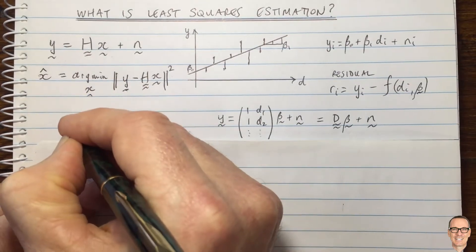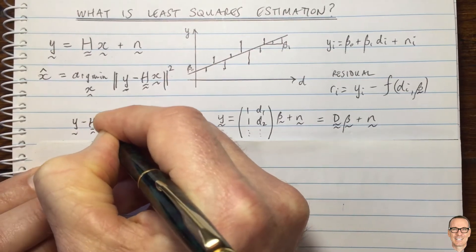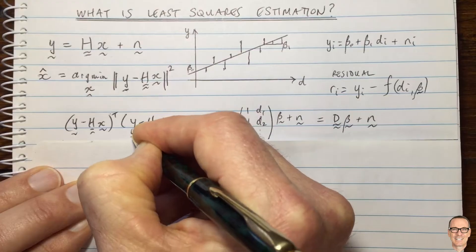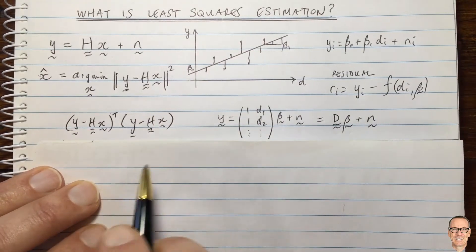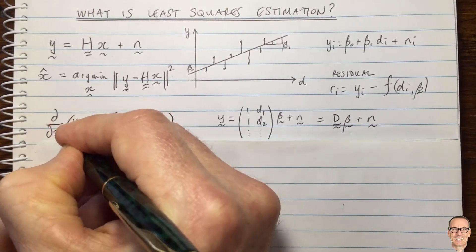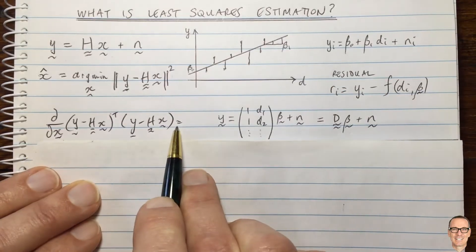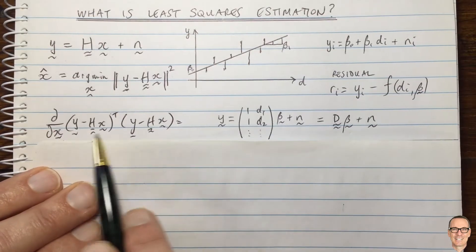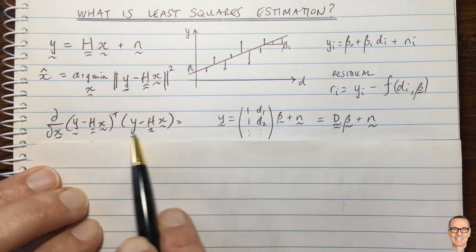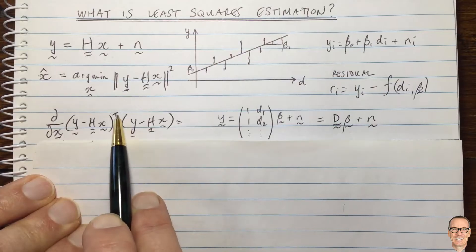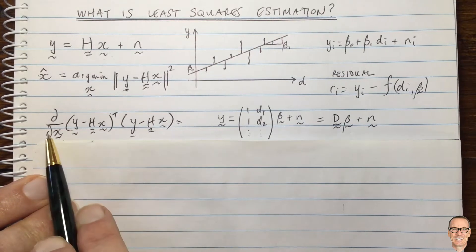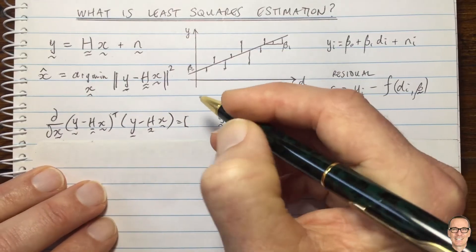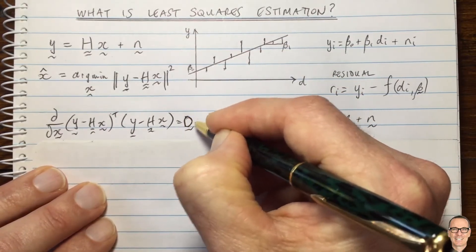We can rewrite the magnitude squared as (y minus Hx)^T times (y minus Hx). We need to take the derivative of this with respect to the vector x and set it equal to zero to find the minimum. Note the dimensions: this expression is a scalar (a row vector times a vector). When you take the derivative of a scalar with respect to a vector, you get a row vector, so this equals the zero row vector.